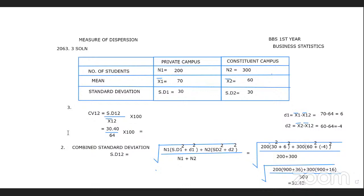The combined coefficient of variation (CV) is 47.5. So the final answer is CV equals 47.5.